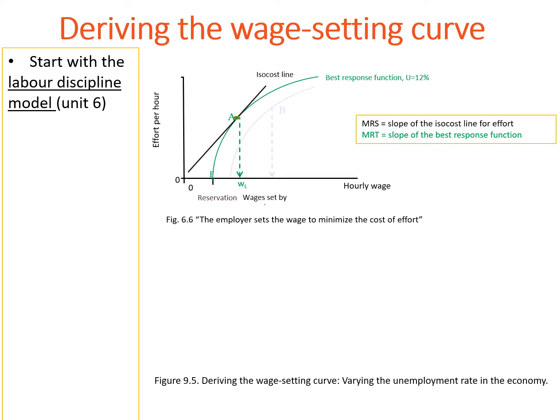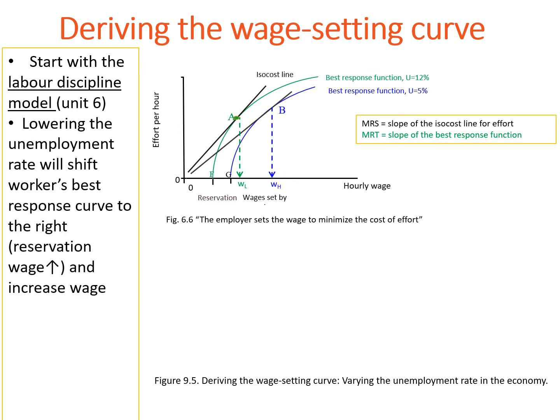What if the unemployment rate was 5%? With a low unemployment rate, the reservation wage will be higher and employees have greater bargaining power. As a result, the best response function is more to the right. In equilibrium, this gives a higher nominal wage.